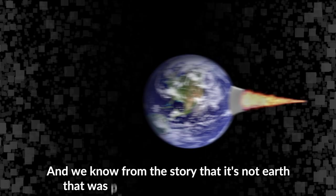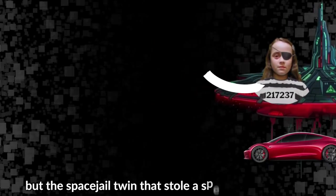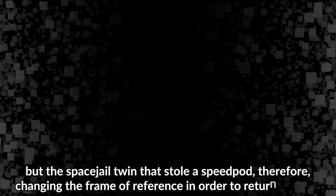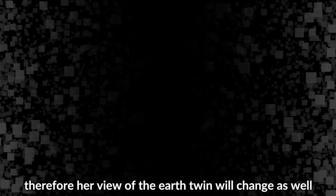See, in order for the twins to meet again, one of them had to change speed, change the frame of reference. And we know from the story that it's not earth that was propelled towards the space jail, but the space jail twin that stole a speedpod, therefore changing the frame of reference in order to return to earth, therefore her view of the earth twin will change as well.